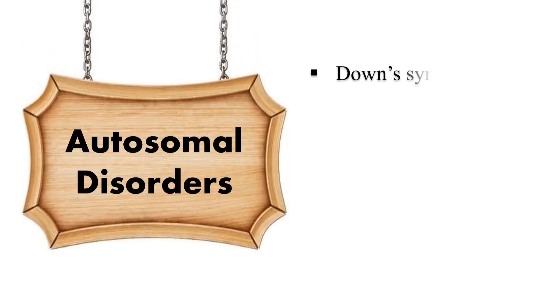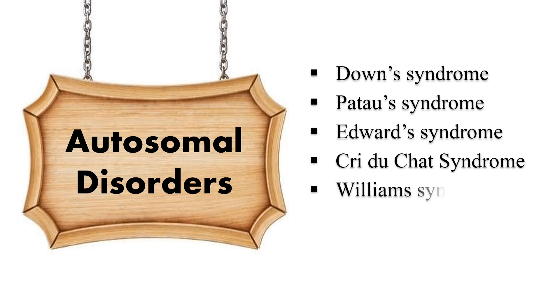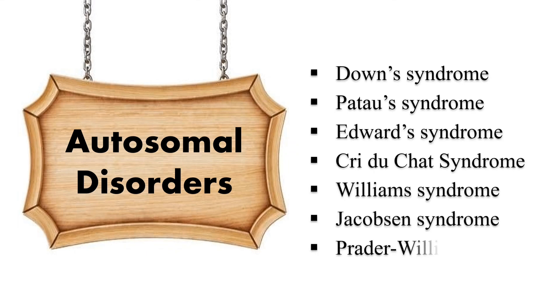Now let's discuss some autosomal disorders, which include Down syndrome, Patau syndrome, Edwards syndrome, Cri-du-Chat syndrome, Williams syndrome, Jacobson syndrome, and Prader-Willi syndrome. Let's discuss these syndromes one by one.